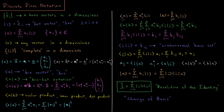We can represent our bra vector a as a sum over all dimensions of a_i star times basis bra vector i, and ket vector b as a sum over all dimensions of b sub j times basis ket vector j. The inner product of bra a with ket b is then the double sum over i and j of a_i star times b sub j times the bracket of basis bra i with basis ket j.